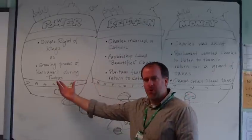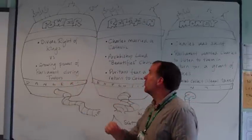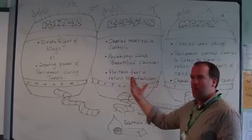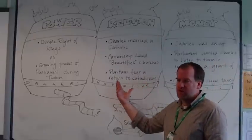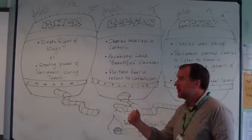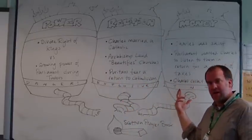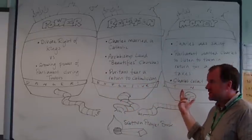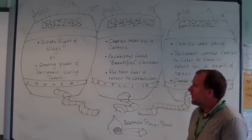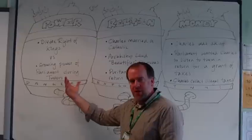These three problems were the problem of power — who should rule — the problem of religion — how should people worship God — and the problem of money — how should you finance the monarchy.